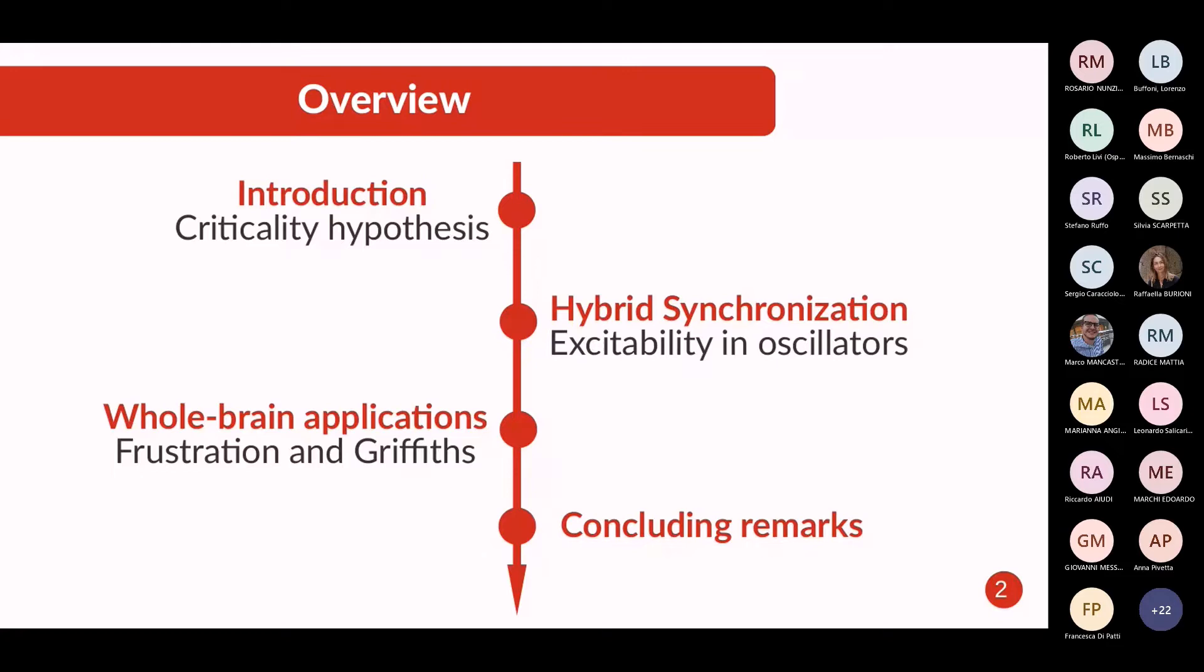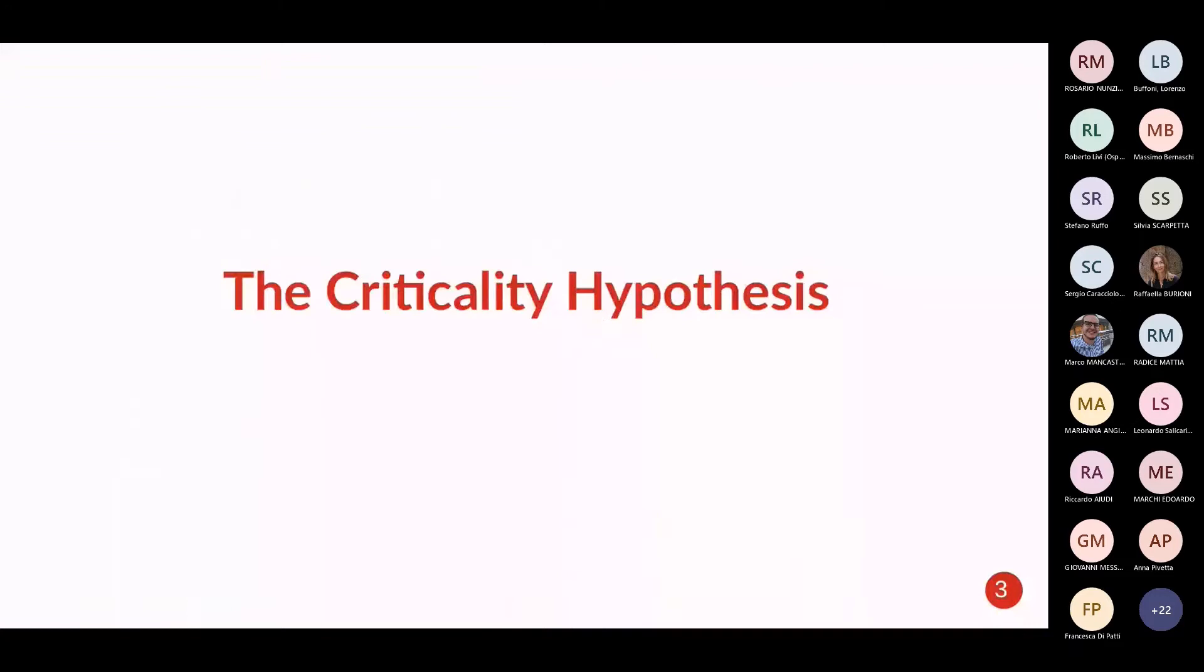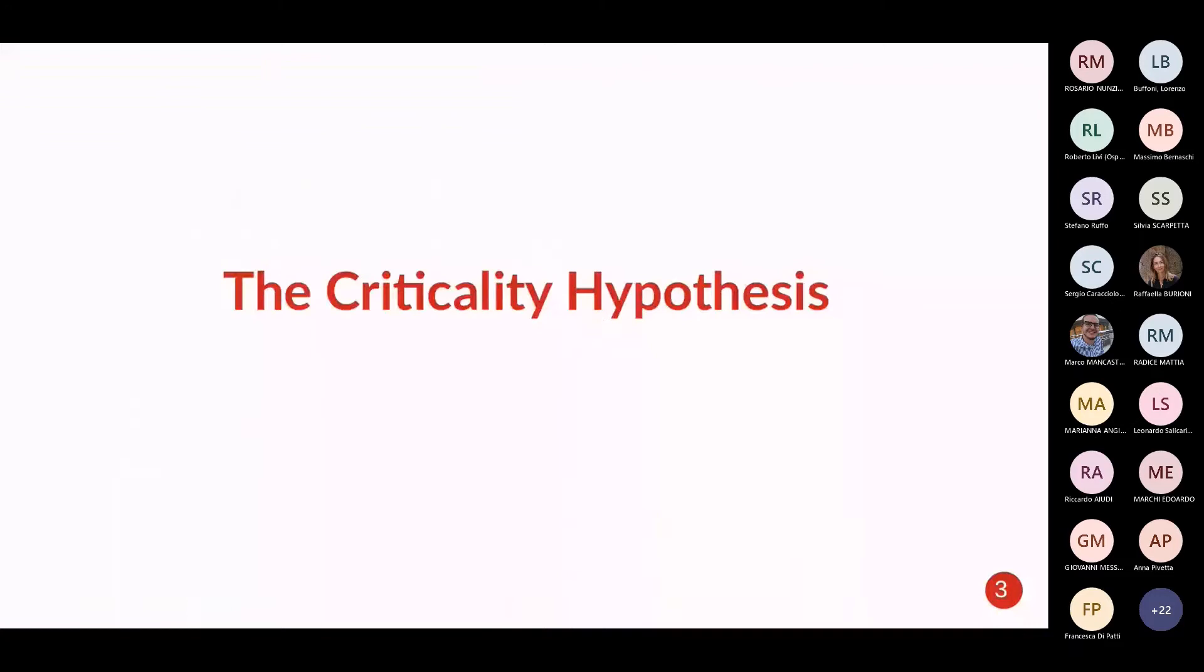I will start with a small motivation on why criticality is important and why we are concerned with criticality in biology and in particular in neuroscience. Then I will talk a bit about synchronization and different kinds of synchronization phase transitions. And finally, we go for a small application or ideas for application in whole brain dynamics. So the first thing is if we are going to talk about criticality and criticality hypothesis is why this is important.